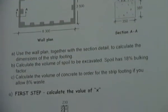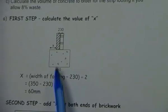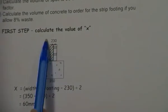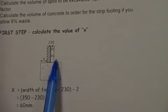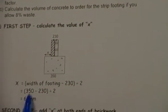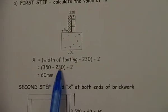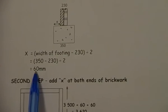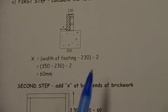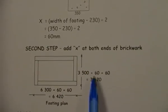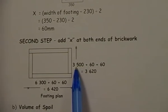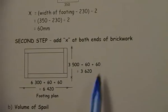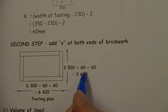When we look here, it is 350, and we're going to minus the two lots of bricks to find out what this X is. So 350 minus 230 divided by 2 is going to give me 60. What that means is on my original side I had 3.5, and I'm going to add 60 and 60, so I get a new figure of 3.620.